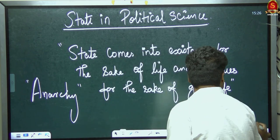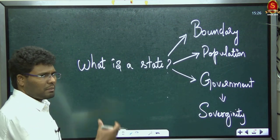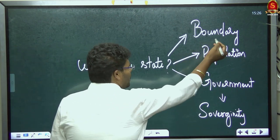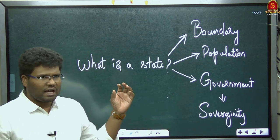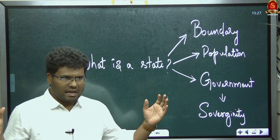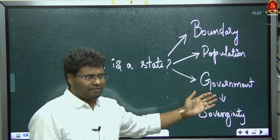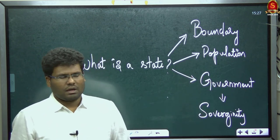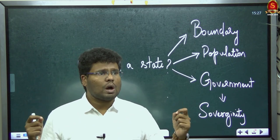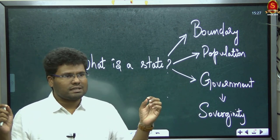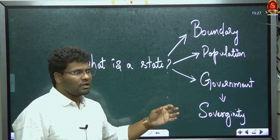In the modern sense, a state must comprise: a defined boundary, a population, a government, and sovereignty. For example, India has a defined boundary, a population of more than 140 crores, an elected government, and that government has sovereignty. Sovereignty means a state can establish its own decisions without any influence from an external agency. India has been a sovereign state from 15th August 1947 — before that, India was a colonial state.